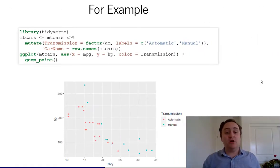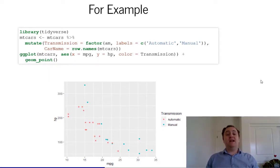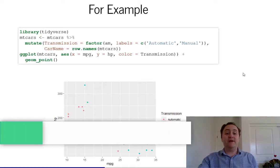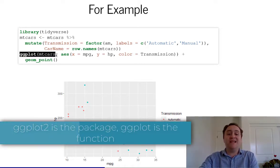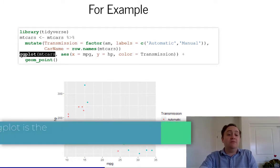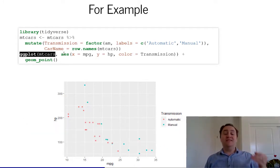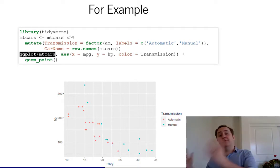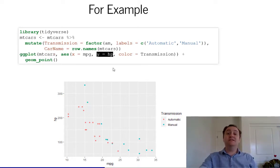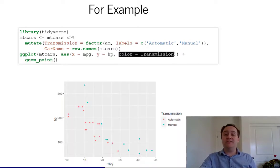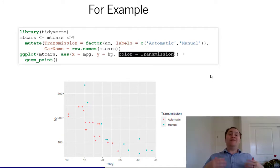Let's say we have some cars data. I want to plot miles per gallon against horsepower on a scatter plot, and I want to do it separately by whether it's an automatic or manual transmission. In the ggplot command, I start with ggplot and first give it the data — the dataset is called mtcars. Next, I tell it the aesthetic: on the x-axis, I want miles per gallon; on the y-axis, horsepower; and I want the color to differ by transmission.